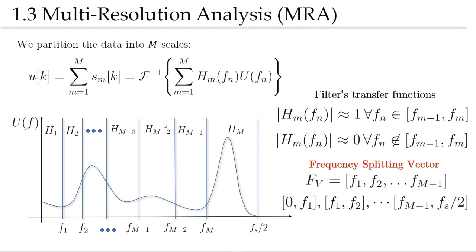These notions can be generalized to an arbitrary number of scales M. Our signal now becomes the sum of various terms, each retaining a non-overlapping portion of the spectrum of the original signal. Each scale is obtained by filtering the signal with a transfer function H_m, where the set of transfer functions has band-pass equal to 1 within a certain region and 0 elsewhere, and they all sum up to 1. The widths of these bands need not be equal and you can choose the partitioning of the spectra freely. In our software this partitioning is introduced as a frequency splitting vector Fv containing all the cutoff frequencies from F_1 to F_{m-1}.